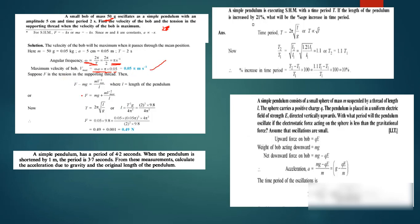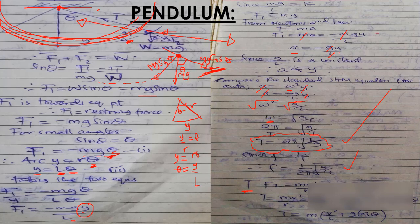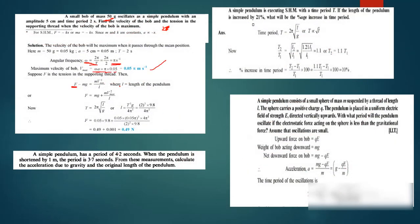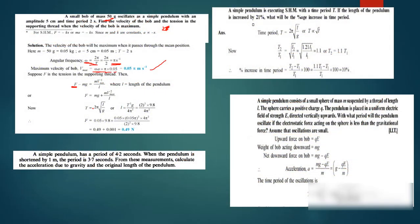For the tension in the supporting thread, the formula is: tension F minus the component of weight mg cos θ equals mv²/r. So the tension equals mv²/r plus mg cos θ, where r is the length of the string. We have the mass, we have gravity, we have the maximum velocity, but we don't have the length.